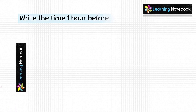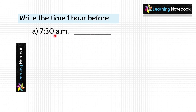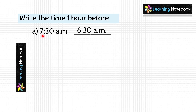Let's do the next question. Write the time 1 hour before the given time. First: 7.30 AM. We have to write the time which is 1 hour before 7.30 AM. So time will be 6.30 AM. This is the time 1 hour before 7.30 AM.